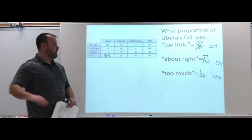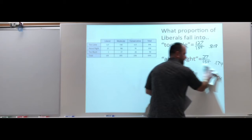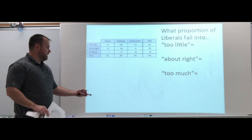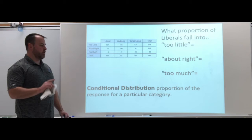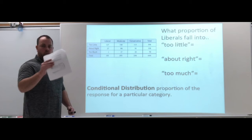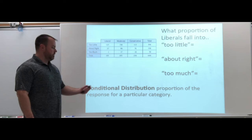The liberals are definitely lopsided here. If we were to find all the proportions for this whole table, it might give us an idea for each explanatory. These are called conditional distributions - the proportion of the responses for a particular category. We broke it down for liberals and saw what that breakdown was, and we saw that liberals by a lot think we spend too little.